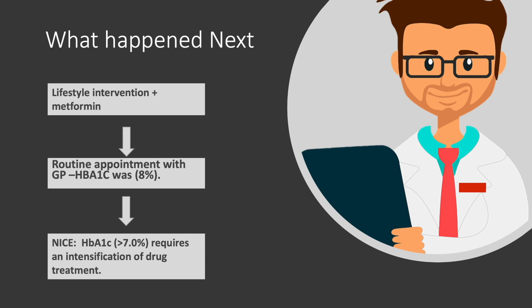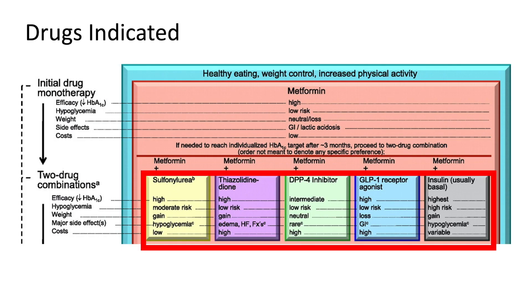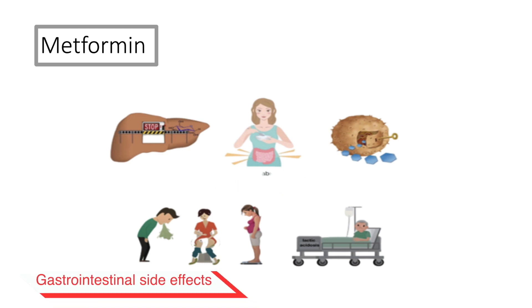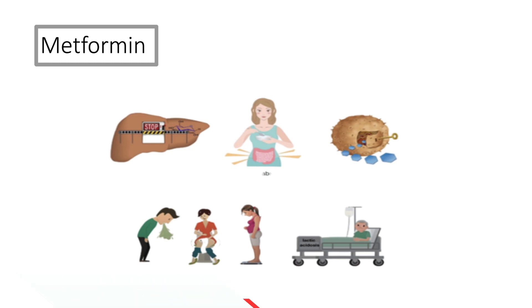However, these measures were unable to control his blood sugar levels, as at a recent appointment his HbA1c was measured at 8%. This being beyond the 7% threshold, NICE recommends intensification of drug treatment. Dual therapy with metformin and either one of four drug classes is now indicated. Metformin increases insulin sensitivity and also reduces the rate of absorption of glucose through the gastrointestinal system. Side effects include GI side effects and lactic acidosis.